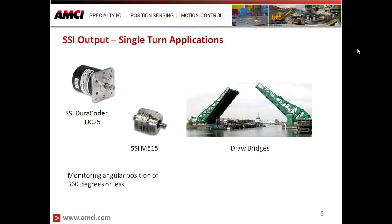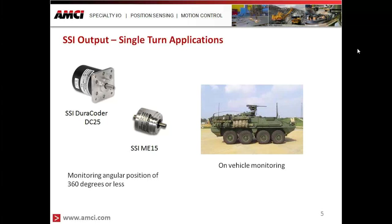The AMCI DC25 encoder shines in rugged environments because of its resolver-based technology. Outdoor applications such as drawbridges need to know exactly where the bridge is as it moves through its up-and-down position. Customers have used the Duracoder in these applications, monitoring not simply 0 to 360 degrees, but 0 to 45 or 0 to 90 degrees. Because of its ruggedness, it's also used in on-vehicle monitoring, including military applications where the SSI output goes directly to a controller, selected for noise immunity and wiring simplicity.